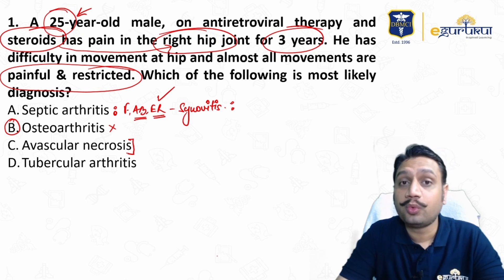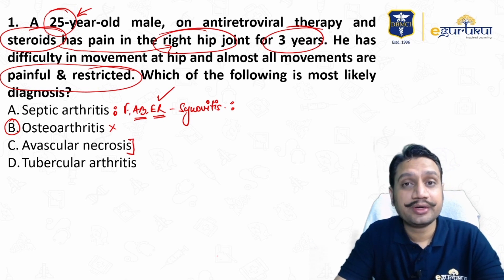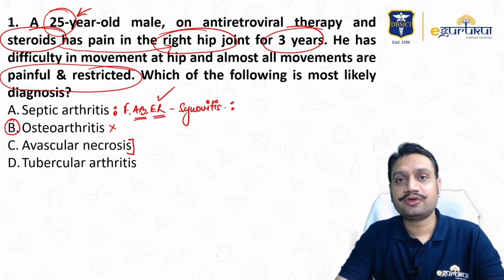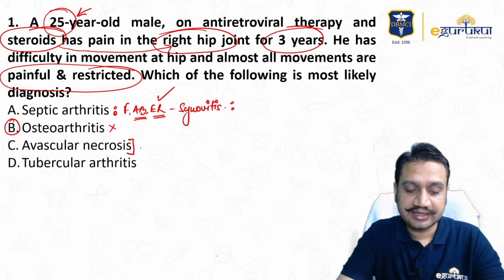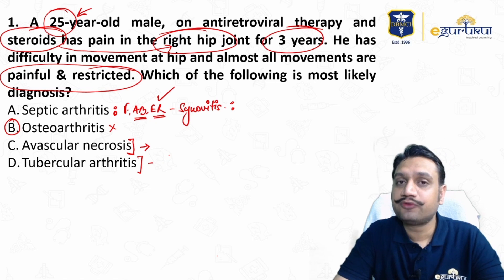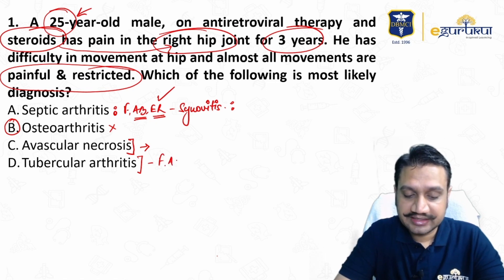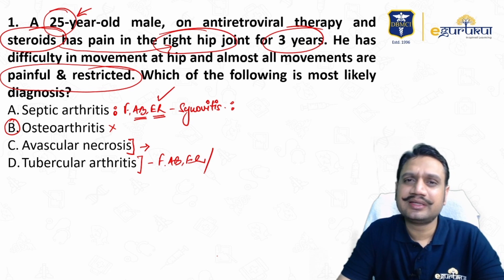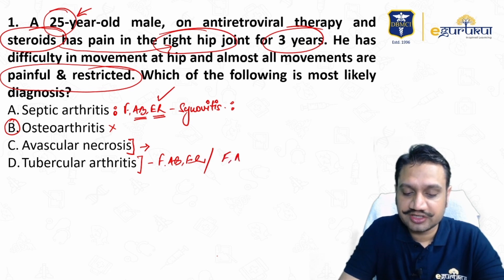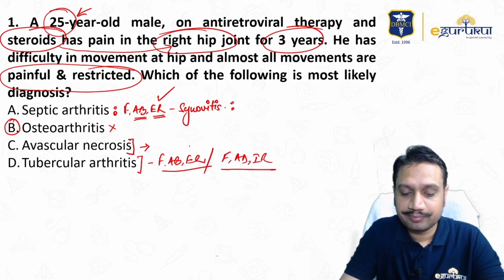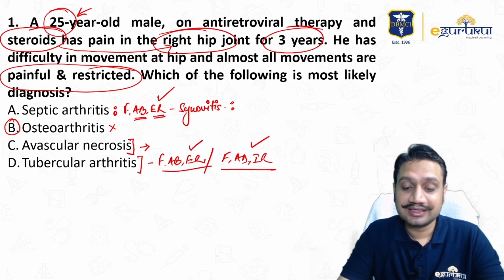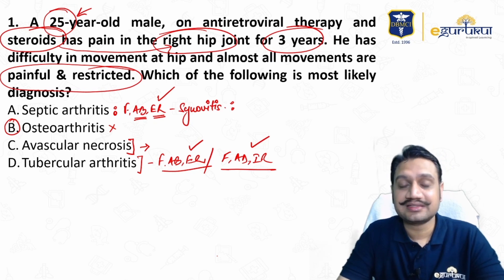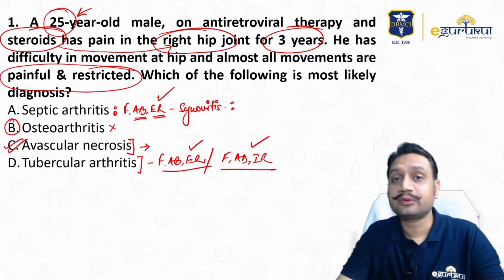AVN is a possibility — the points favoring it are: young age group, steroid use, single hip pain, and long duration of symptoms. Tubercular arthritis goes through stages: first synovitis with flexion-abduction-external rotation, then later flexion-adduction-internal rotation — opposite movements are restricted. But here, all movements are painful and restricted globally. Therefore, the most likely diagnosis is avascular necrosis.